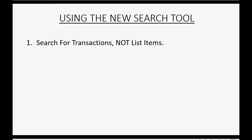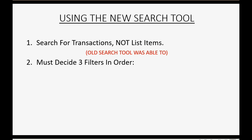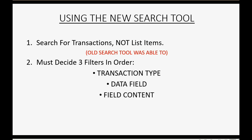Using the new search tool is a little different than it was years ago. You can search only for transactions, not list items, and you cannot search for data fields within list items like customers, chart of accounts, or the items list — only data in transactions. When you search, you must decide three filters in a specific order: first, the transaction type; then, the data field within that transaction; then, the content of that field.